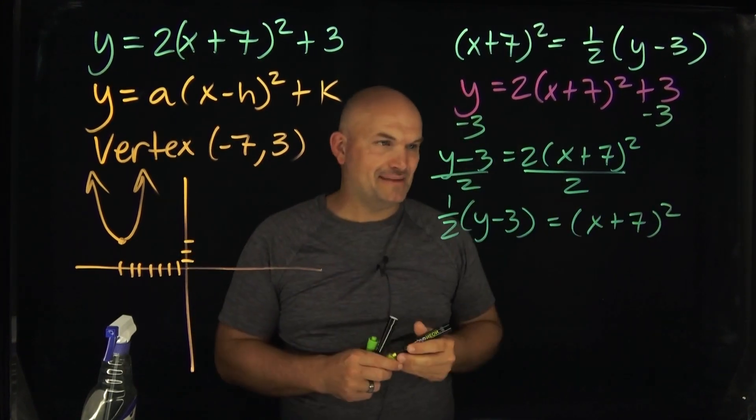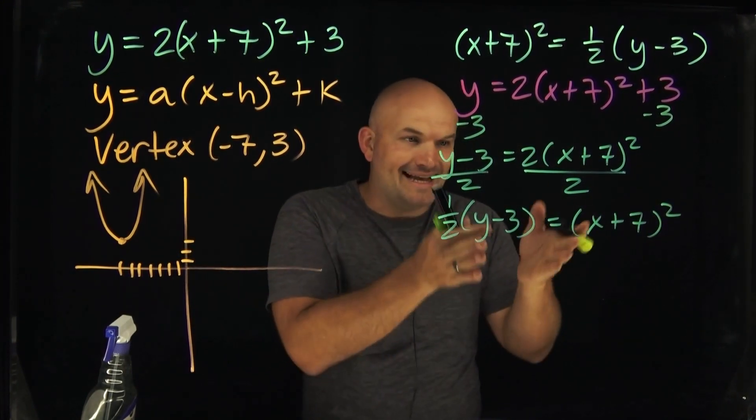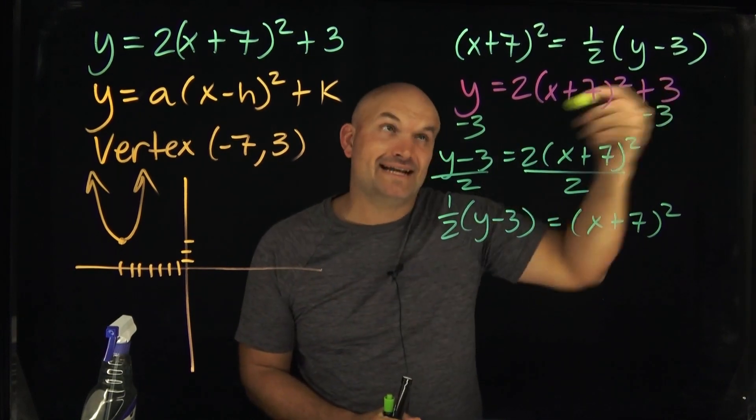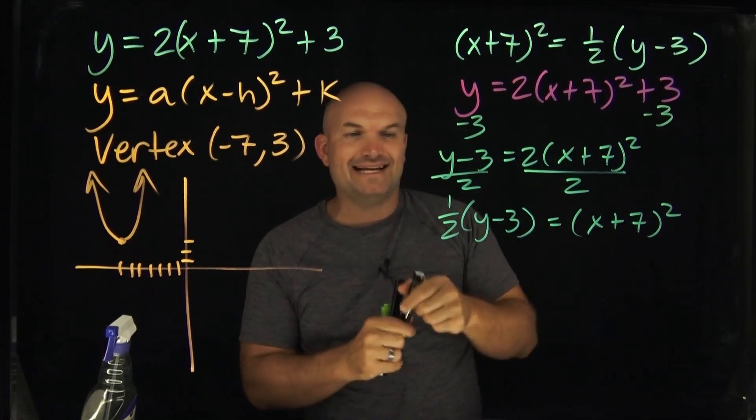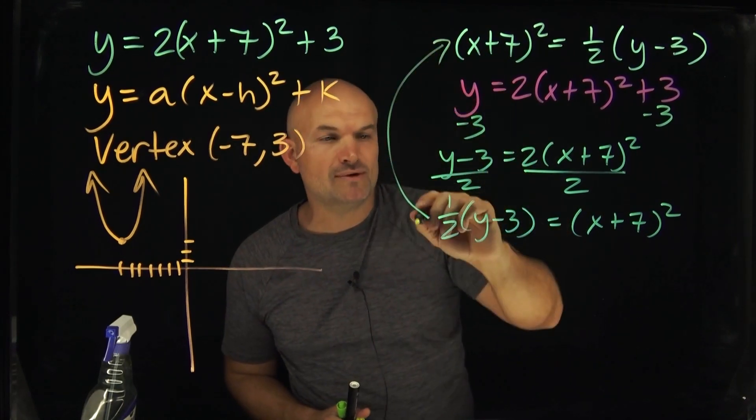And voila, ladies and gentlemen, we have now identified this in its standard form for conic sections. Now, obviously, you can just apply the reflexive property and just flip that around. And you'll see it's exactly the same as what we're dealing with over here.